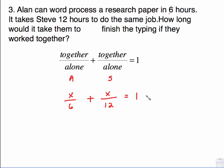Equals 1. This little setup is always equal to 1, and what 1 refers to is the total job. No matter what the total job is, it's always equal to 1. We have fractions, so we need to clear out the denominators.